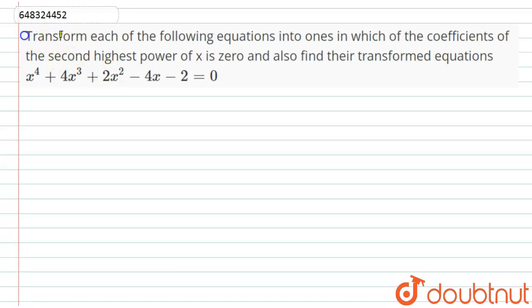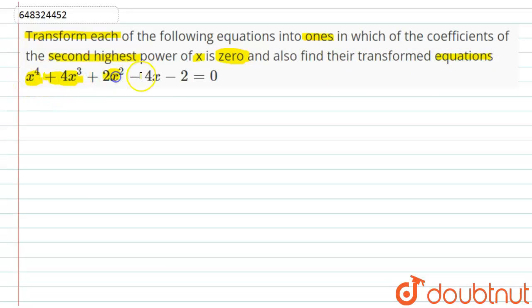Hello students. The question is: transform each of the following equations into ones in which the coefficient of the second highest power of x is 0. Also find the transformed equations. The equation is x⁴ + 4x³ + 2x² − 4x − 2 = 0.